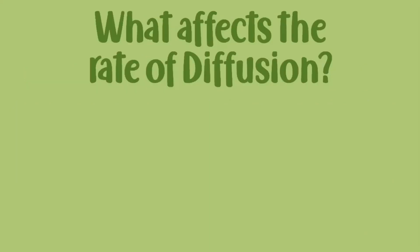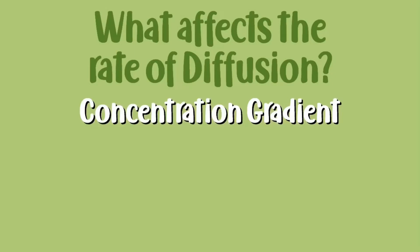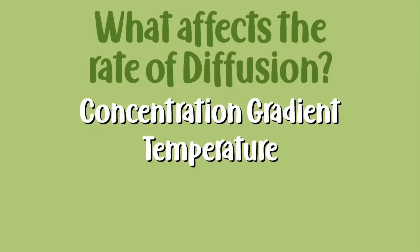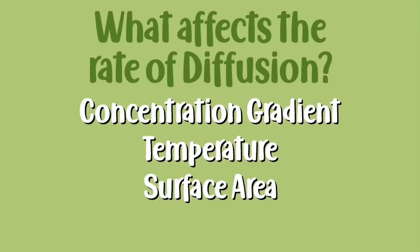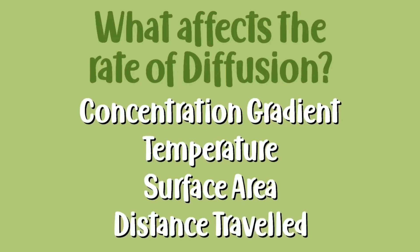So what affects the rate of diffusion? These are concentration gradient, temperature, surface area, and the distance travelled. Now we can move on to osmosis.